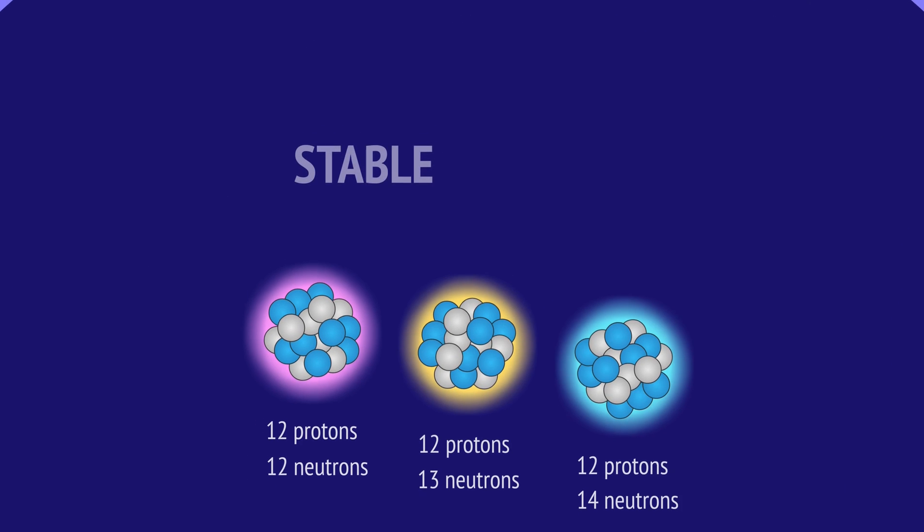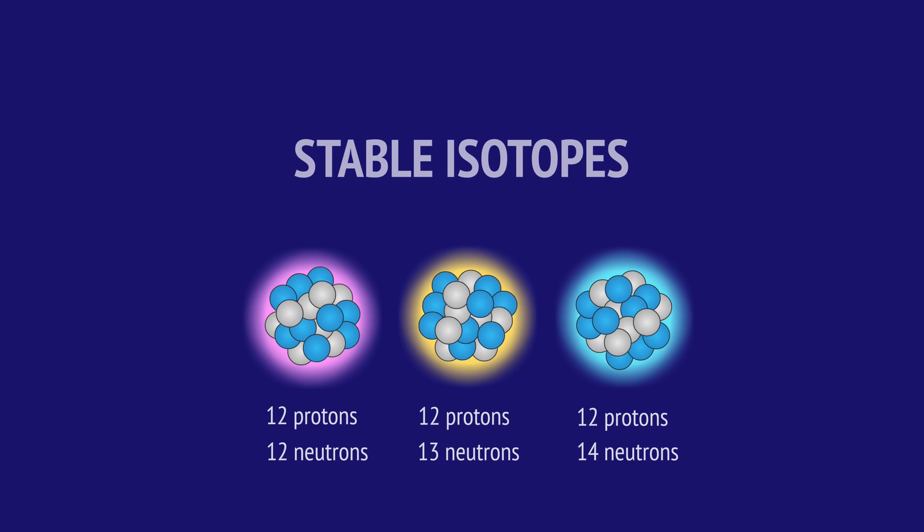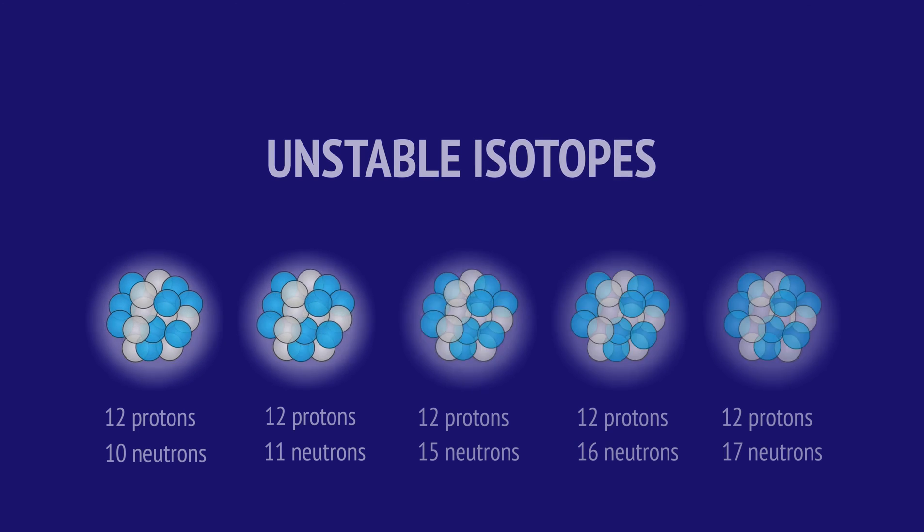We've seen that only certain combinations of protons and neutrons result in stable isotopes, whereas other combinations will be unstable and radioactive.